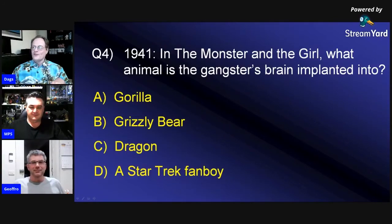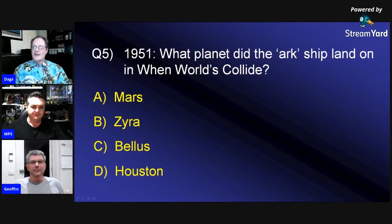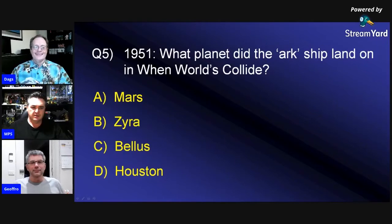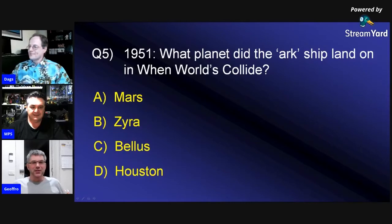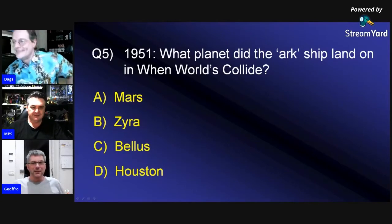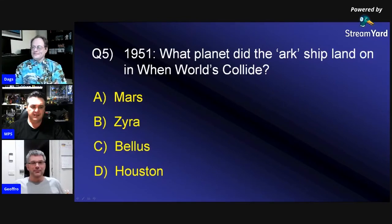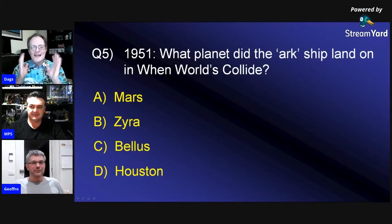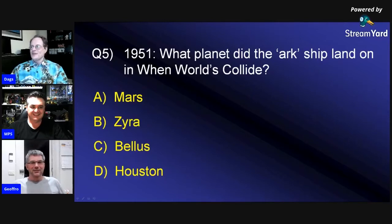Now we're getting to more familiar territory — 1951. What planet did the Ark ship land on in When Worlds Collide? Was it A, Mars; B, Zyra; C, Bellis; or D, Houston? It's a choice between two, but I'm going to go B. Yeah, I'll go B as well. I hope this is like mind-bending for everybody at home.